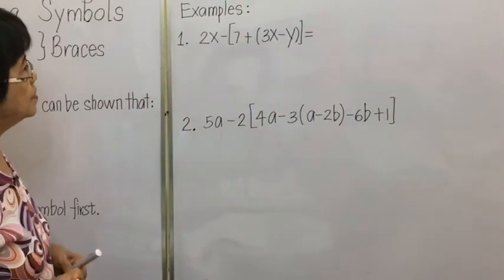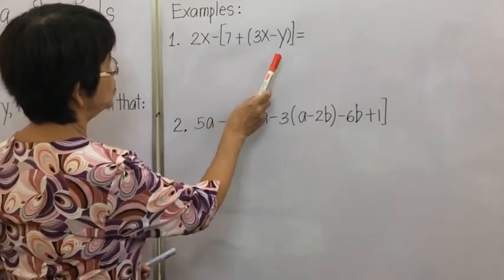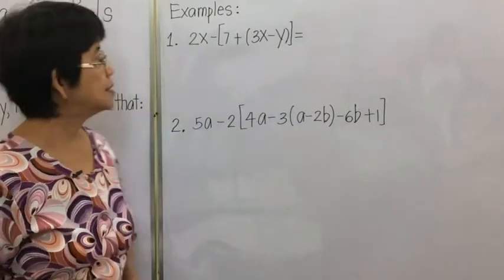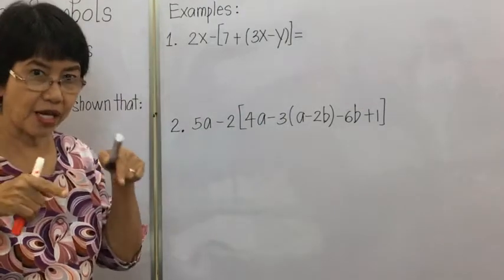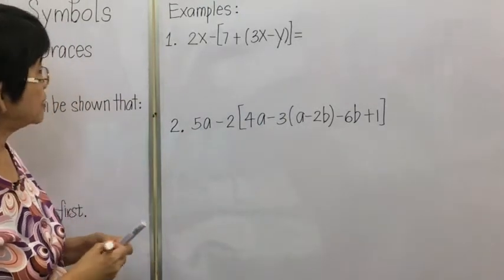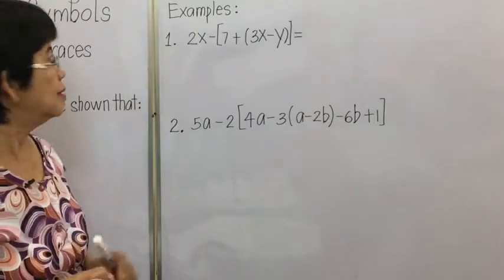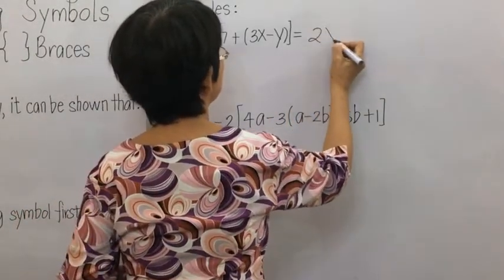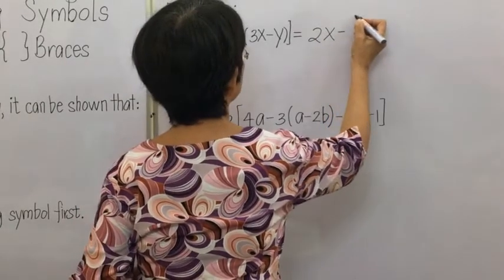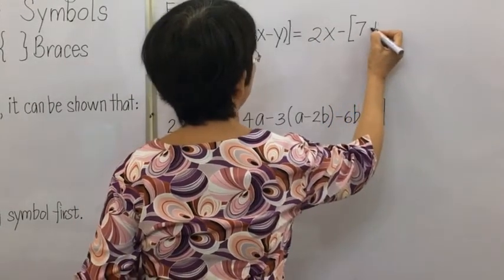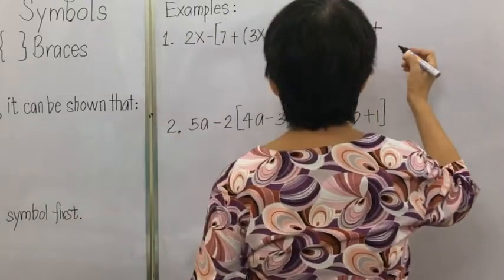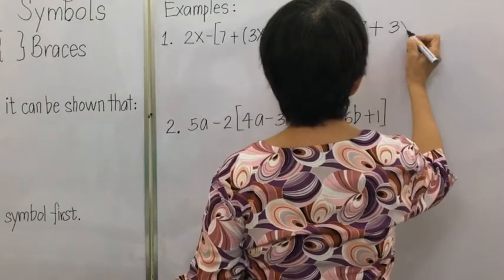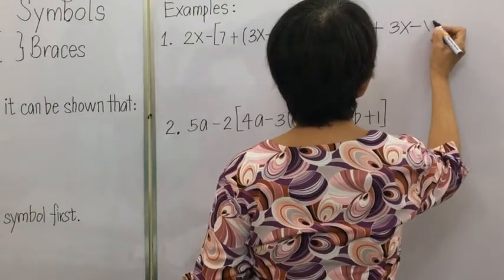In example 1, we have two grouping symbols. The innermost grouping symbol is found inside the brackets, so we remove that first and rewrite the rest. We copy 2X, then 3X minus 7, plus, and then we remove the grouping symbol to get 3X minus Y.